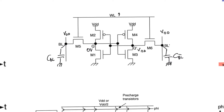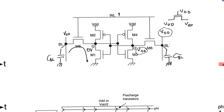What's going to happen now is that CBL is going to discharge through transistors M5 and M1 because M1 is on. CBL bar is going to remain at the same voltage because we have a value of VDD on both terminals of M6. This transistor M6 is going to be cut off, and this is a valid steady state for this transistor.